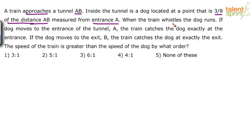Whether the dog moves towards the entrance or towards the exit, the train catches the dog at the entrance and exit respectively. If the dog moves towards the entrance, the train catches the dog exactly at the entrance. If the dog moves towards the exit, the train catches the dog exactly at the exit. Based on this data, we have to find out the speed ratio — speed of the train to speed of the dog.